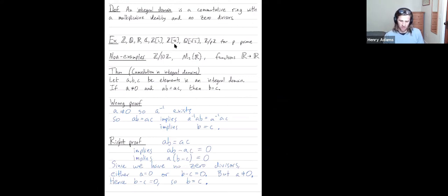In fields, we proved the cancellation property because we said if ab equals ac and a was non-zero, then a had an inverse, multiply it by the inverse to get b equals c. In integral domains, you still have this cancellation property. It's just cool. You have to prove it differently using addition and the distributive law.